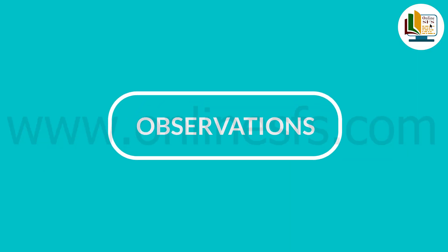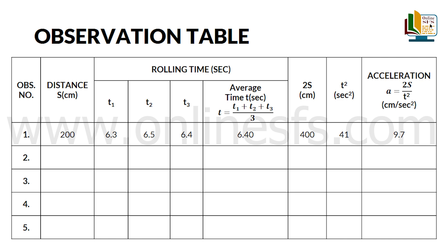Now we will note down our readings in the observation table. This is the observation table. Distance s equals to 200 cm.